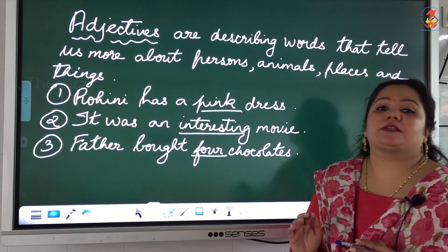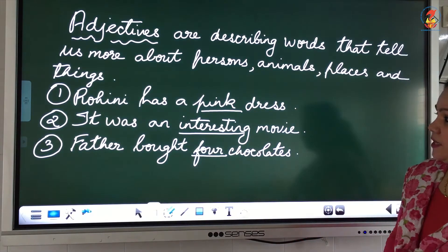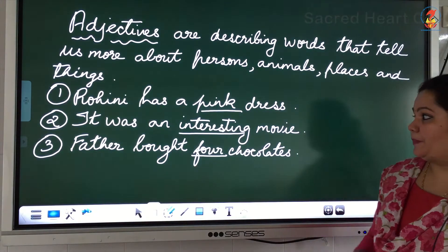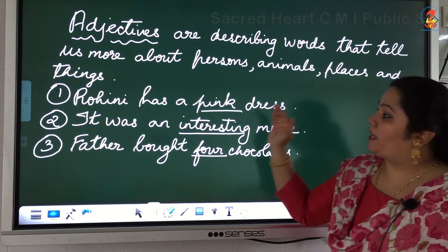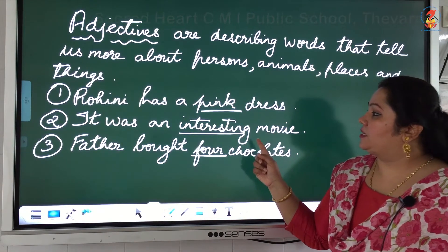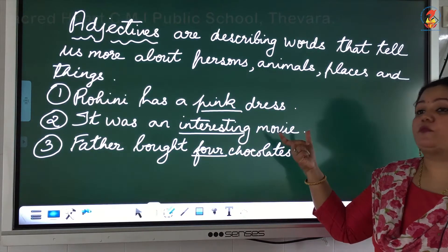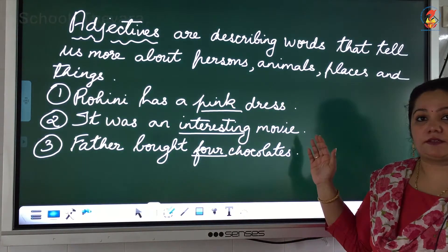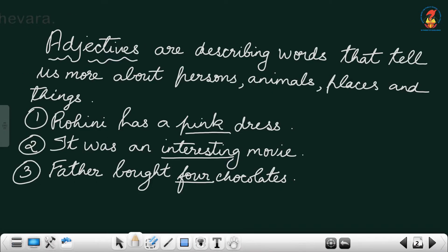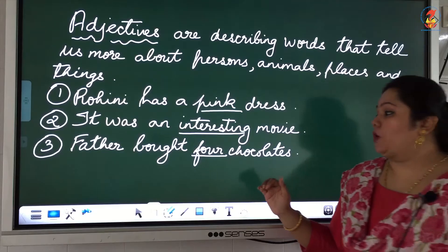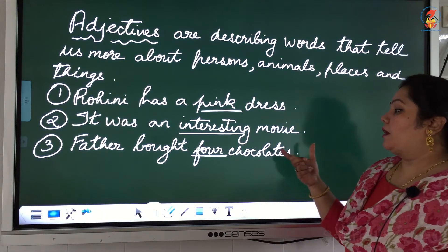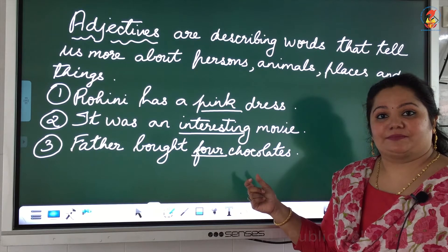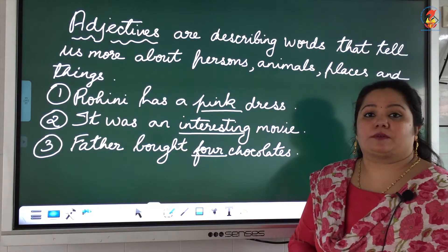Adjectives describe a noun in a sentence. Now look at the second sentence: It was an interesting movie. The word 'movie' is a noun, and 'interesting' tells you what kind of movie — so 'interesting' is the adjective. For the third sentence: Father bought four chocolates. How many chocolates? Four. So the word 'four' is the adjective in this sentence.